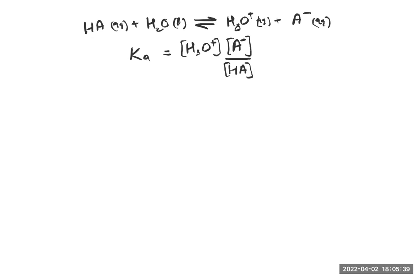And then what I'm going to do is take the minus log on both sides. Minus log Ka must be equal to minus log H3O+ concentration. I can separate that from the rest of it.